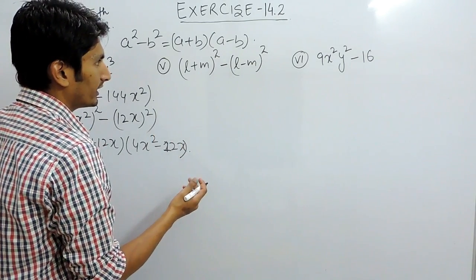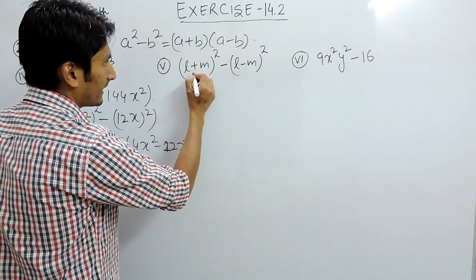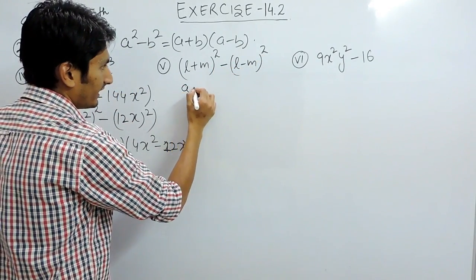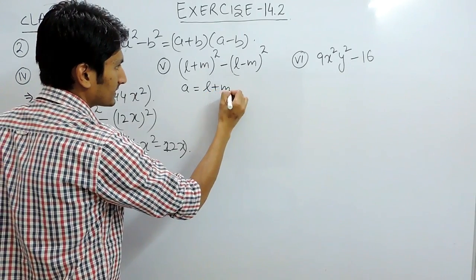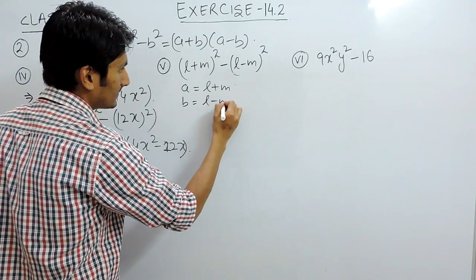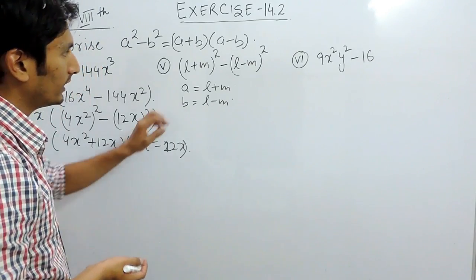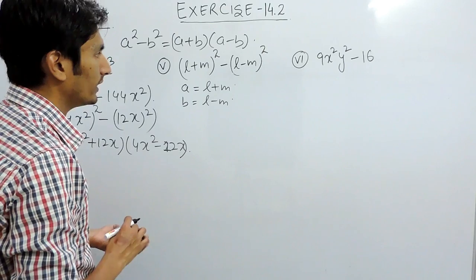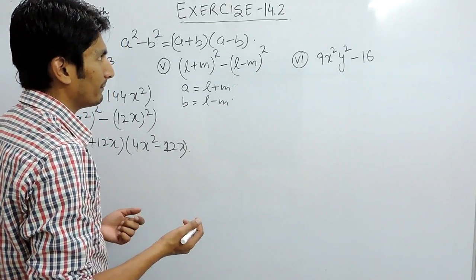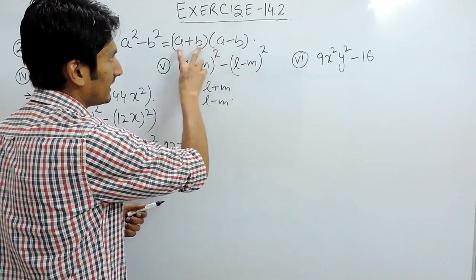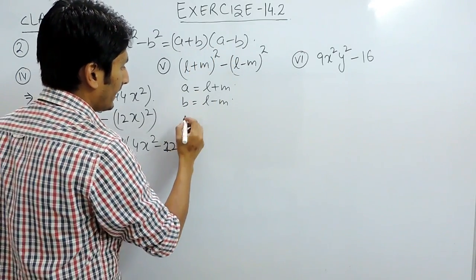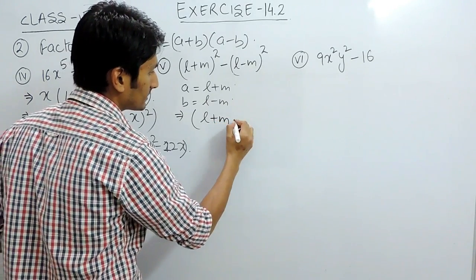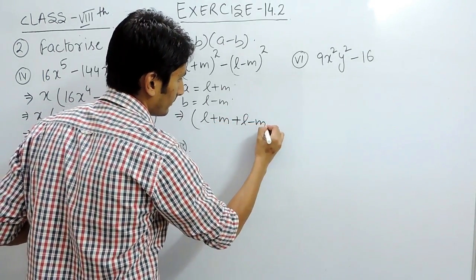Now let's solve this one. This is again a² - b², where a is equal to (l+m) and b is equal to (l-m). So this is a² - b², and this is equal to (a+b)(a-b). Same formula: this is (a+b)(a-b), where our a is l+m and our b is l-m.